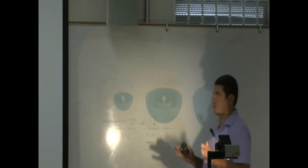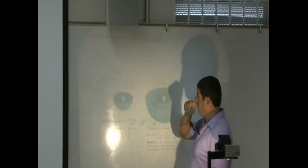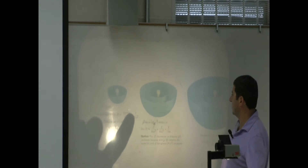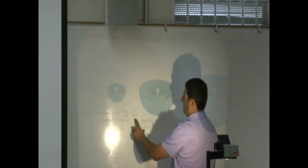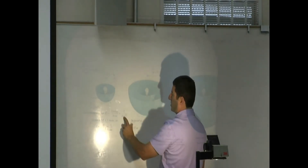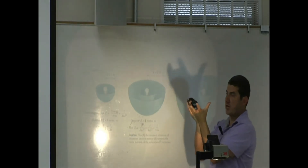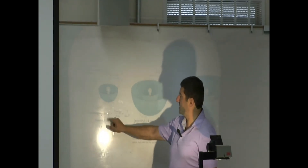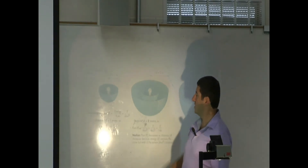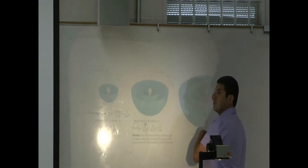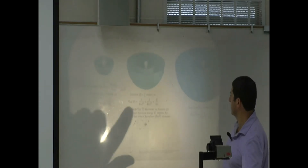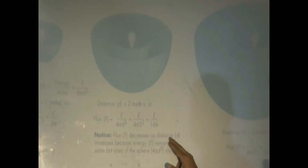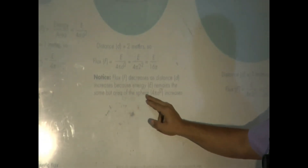This equation is not only true for stars — it could be true for any light bulb. Electromagnetic flux is energy divided by area, and the area of a sphere is 4π times the distance from the light source squared. So if you're one meter away from that light bulb, you receive E divided by 4π. If you are two meters away, you receive E over 4π·2², which is E over 16π. The flux decreases as distance increases because the energy remains the same but the area of the sphere increases.